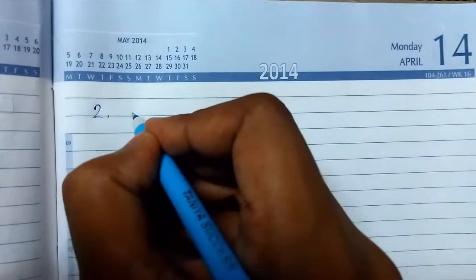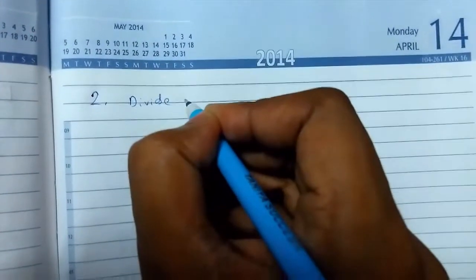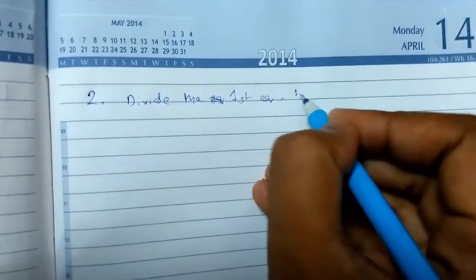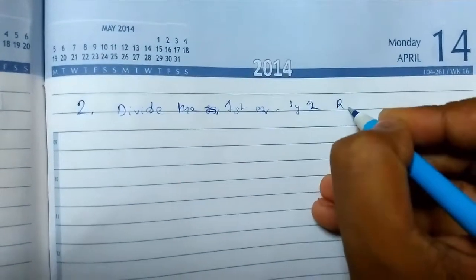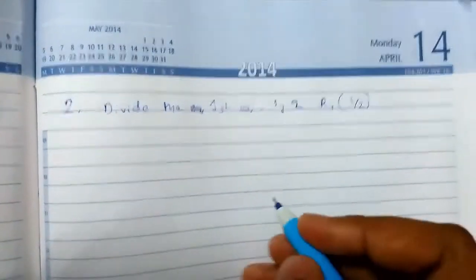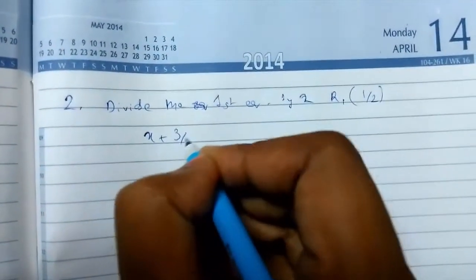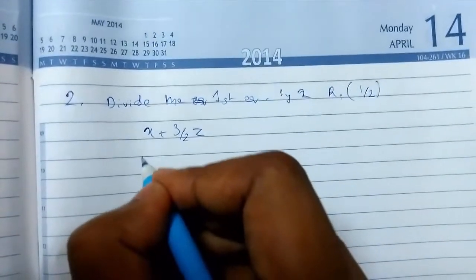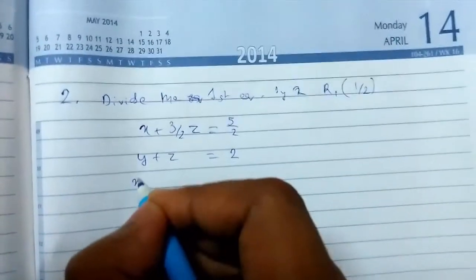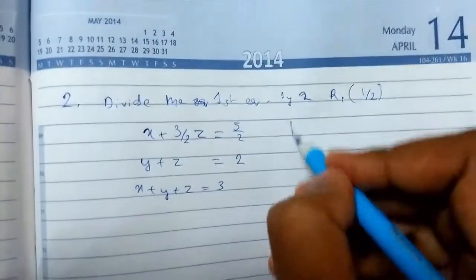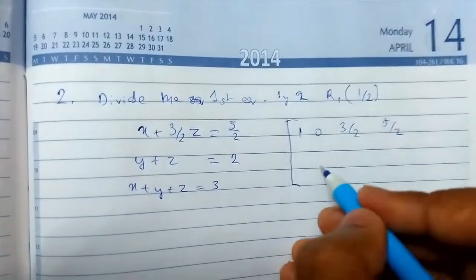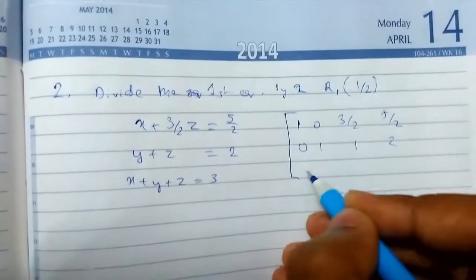The next step we are going to do is divide the first equation by 2. Or you can also write in sort of symbols, so R₁ divided by 2. So this is how you write it. Let us see how - just write this step. It will be good. So just write the augmented matrix: 1 0 3/2 5/2, 0 1 1 2, and 1 1 1 3.